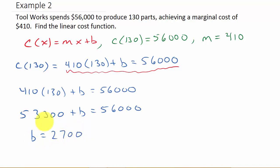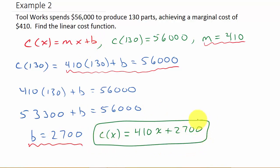So, look at this. I have b, I know m, so I can plug in m, I can plug in b, and that gives me my cost function. My cost function C(x) is equal to m, which is 410, times x, plus b, which is 2,700. And there's your answer.